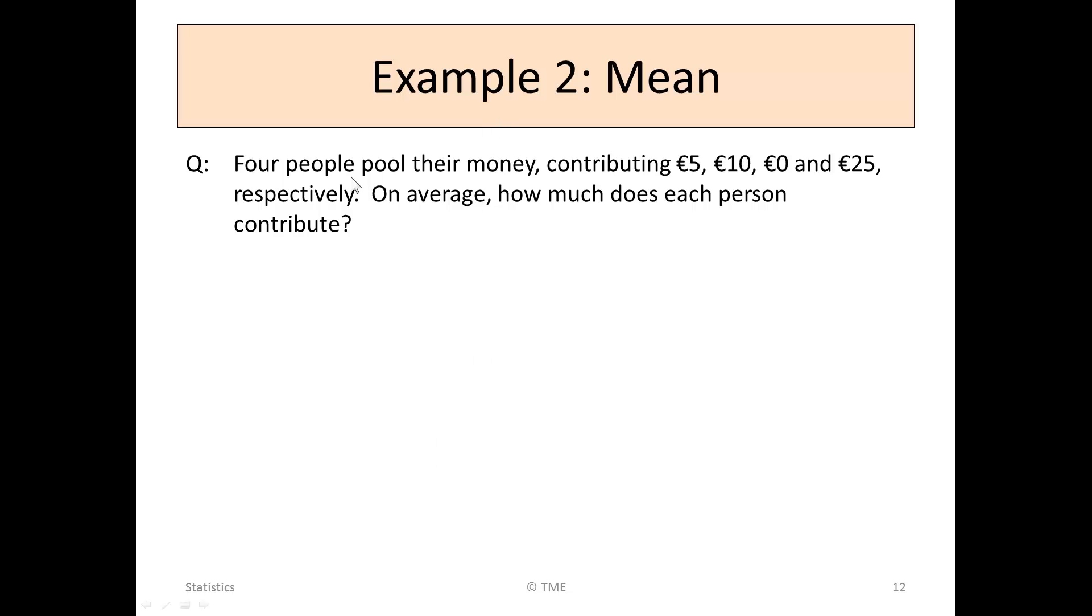Example 2. Four people pool their money, contributing €5, €10, nothing and €25 respectively. On average, how much does each person contribute?